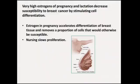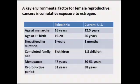The adoption of agriculture is not the only thing distinguishing modern women from our Paleolithic ancestors. We've also undergone urbanization, sedentarization, industrialization, and modernization. Going back to proximate causes: very high estrogen levels of pregnancy and lactation decrease susceptibility to breast cancer by stimulating cell differentiation. This is important because that cell differentiation removes some cells that would otherwise be vulnerable to uncontrolled proliferation. Nursing in turn further slows proliferation. I'm starting to move towards our evolutionary explanation.